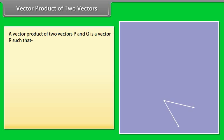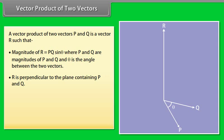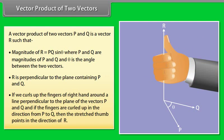The vector product of two vectors P and Q is a vector R such that the magnitude of R equals P*Q*sin(θ), where P and Q are the magnitudes of the vectors and θ is the angle between them. R is perpendicular to the plane containing P and Q. If we curl the fingers of the right hand around a line perpendicular to the plane of P and Q, curling from P to Q, then the stretched thumb points in the direction of R.